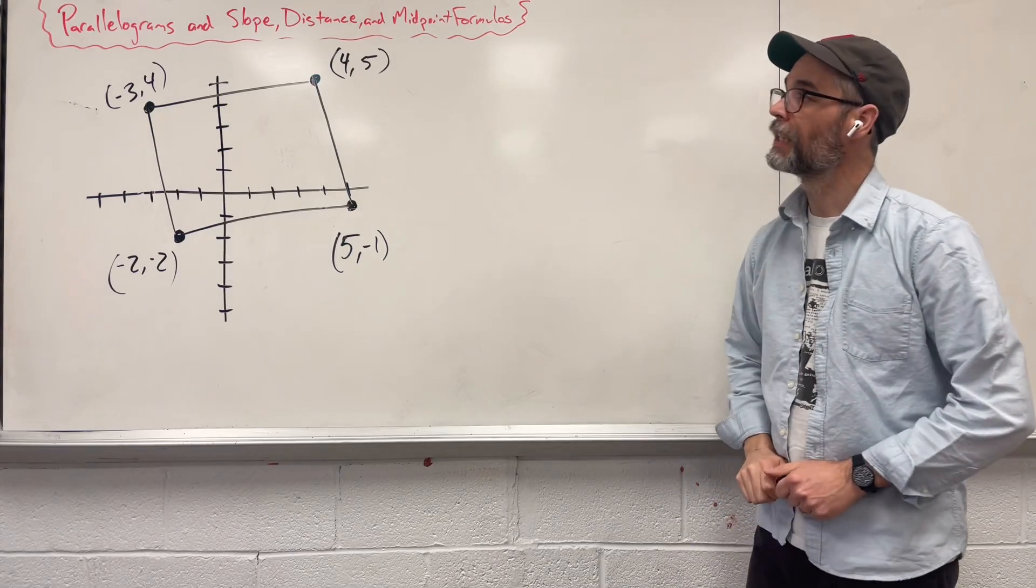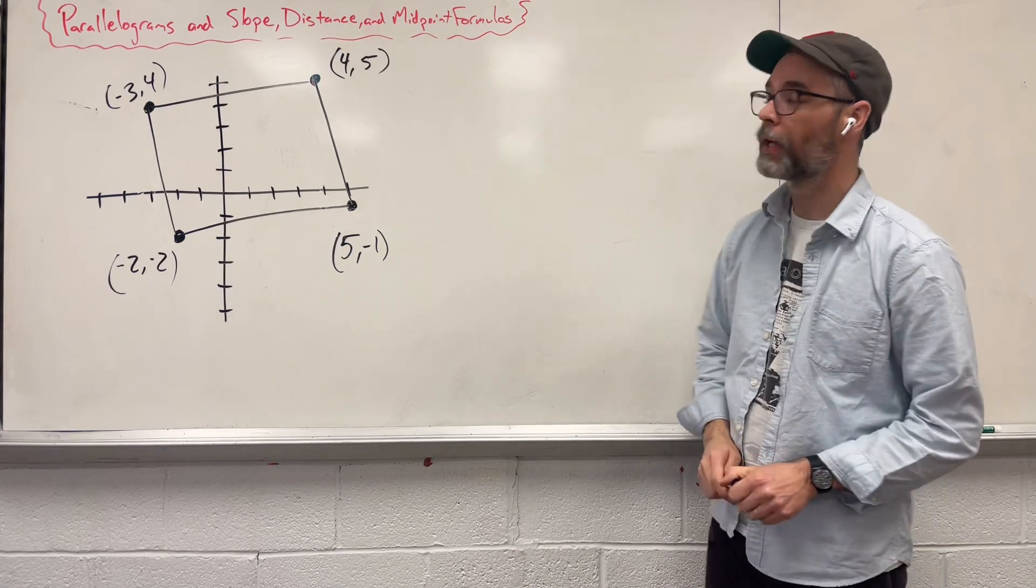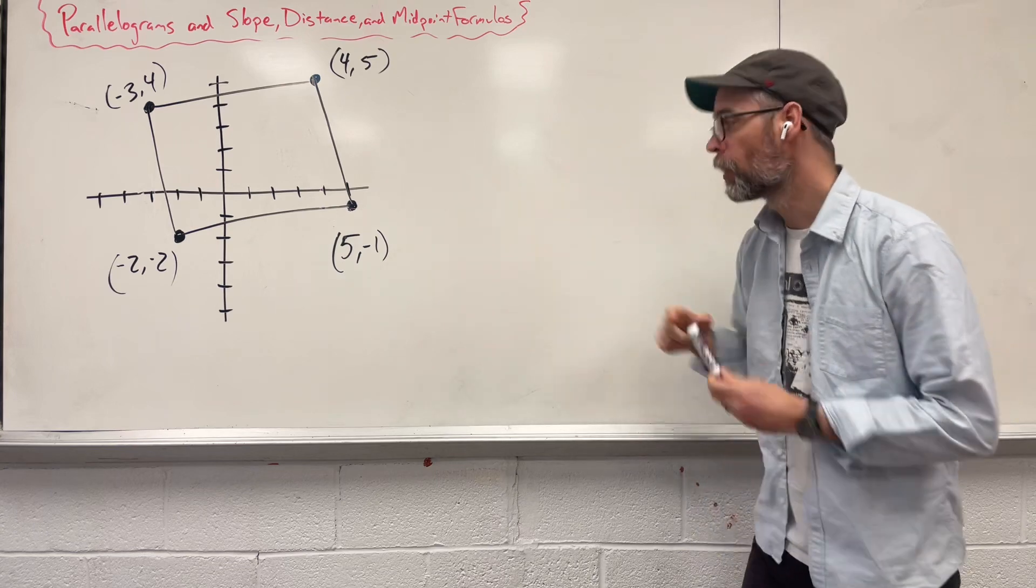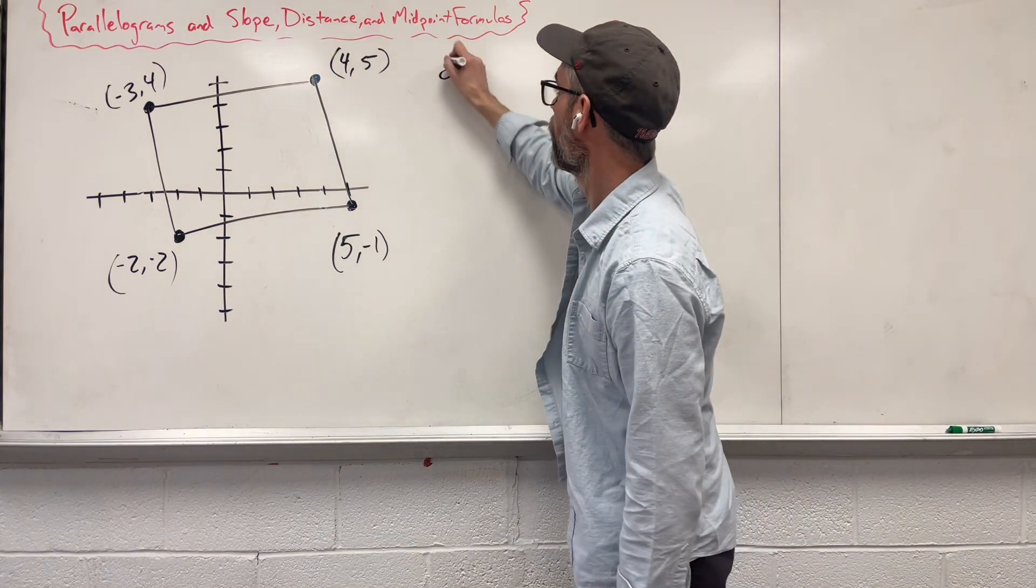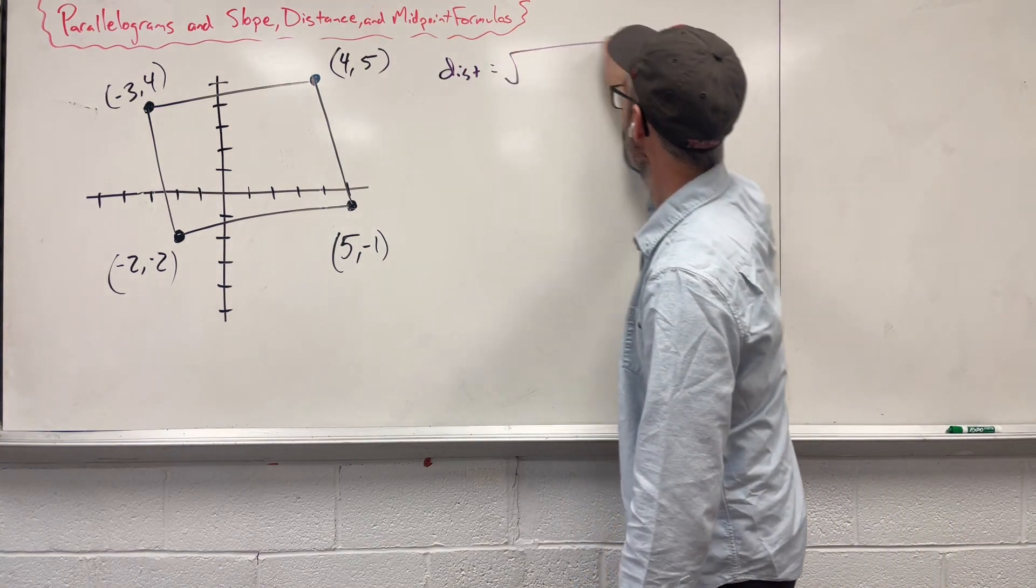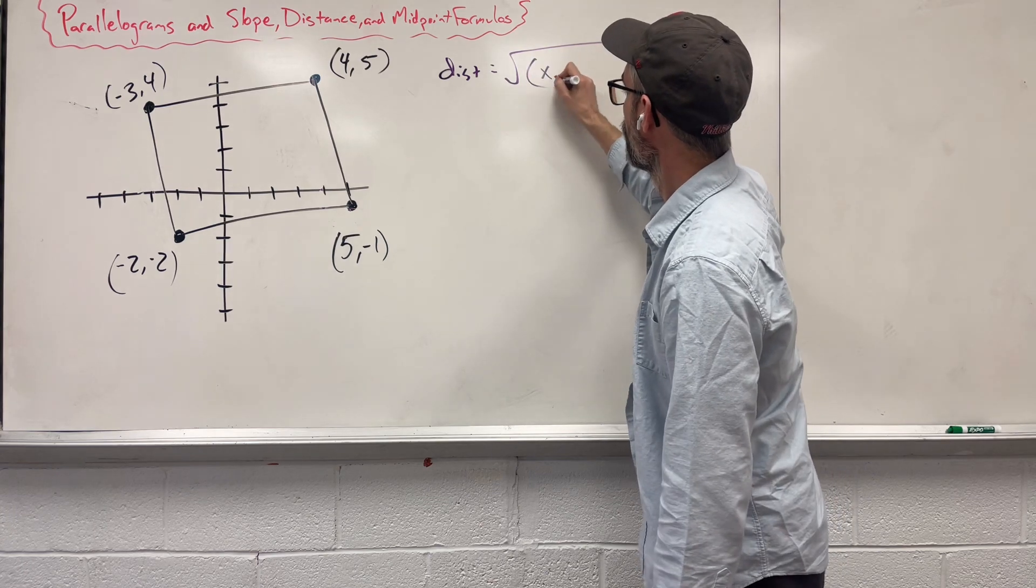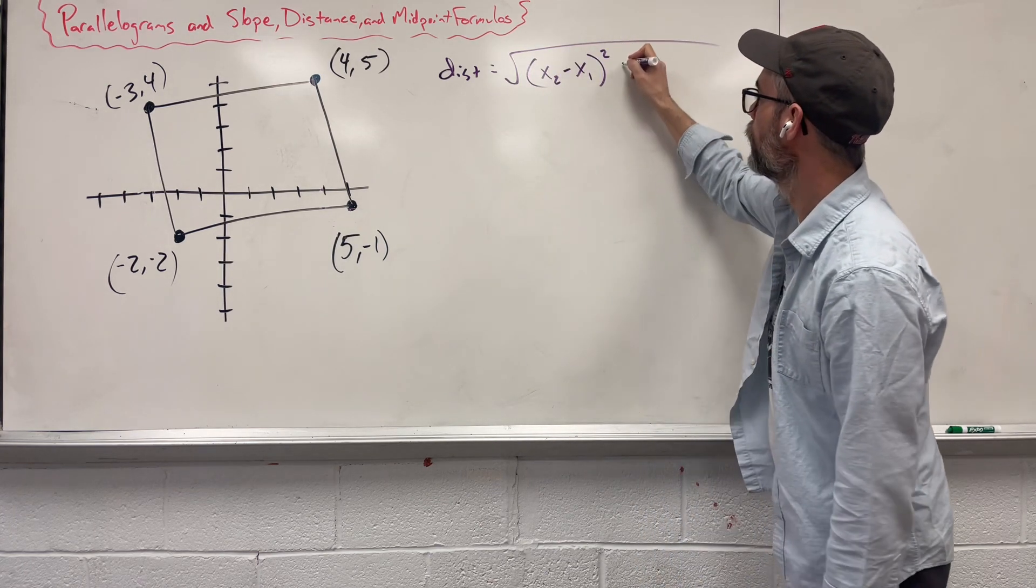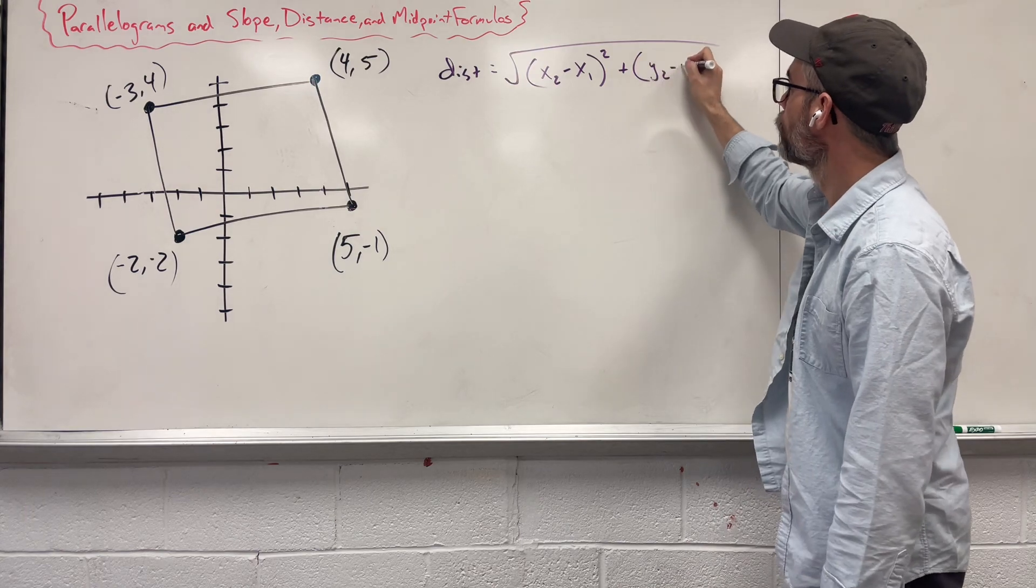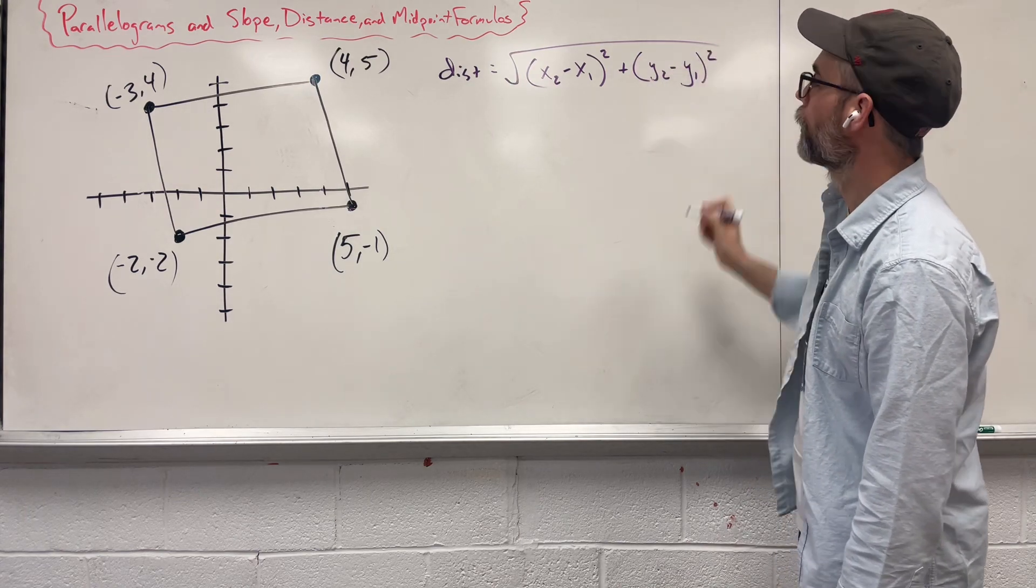Hi, today we're going to take a look at using the distance formula to help prove that we in fact have a parallelogram here. So what is the distance formula? We have distance equals the square root of x2 minus x1, square it, plus y2 minus y1, square that whole thing.